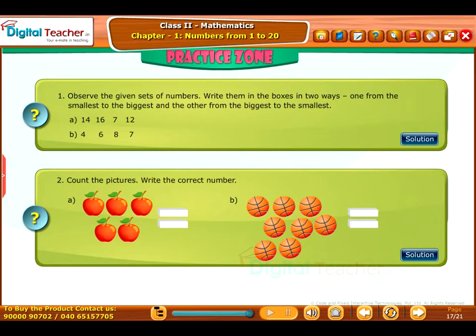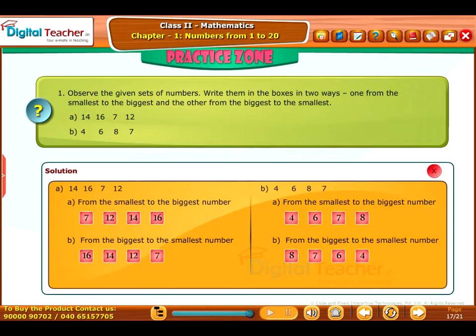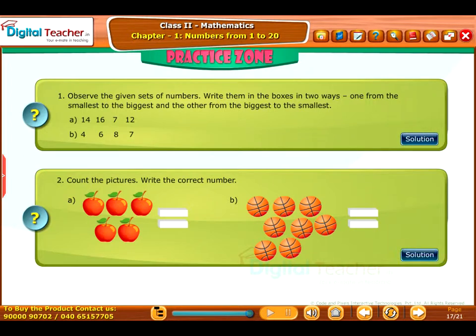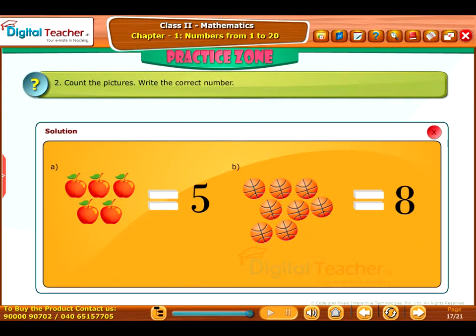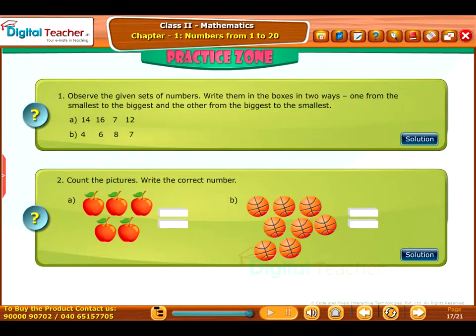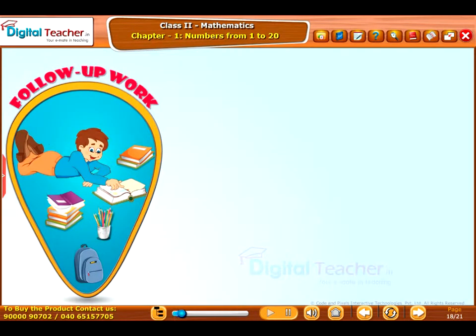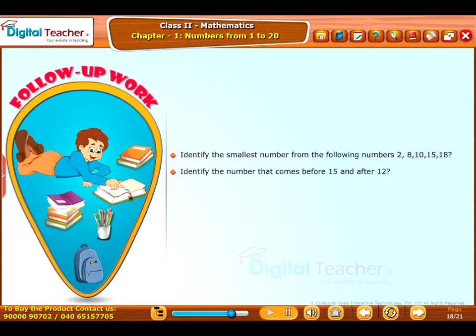Practice: Try to solve the questions on your own. Click Solution tab to verify your answer. Follow-up work: Identify the smallest number from the following numbers 2, 8, 10, 15, 18. Identify the number that comes before 15 and after 12.